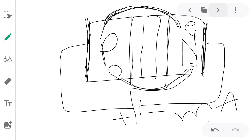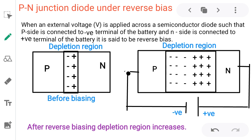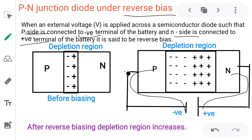Now, reverse bias. Definition: when an external voltage V is applied across a semiconductor diode such that the P side is connected to the negative terminal and the N side is connected to the positive terminal of the battery, this is known as reverse bias.